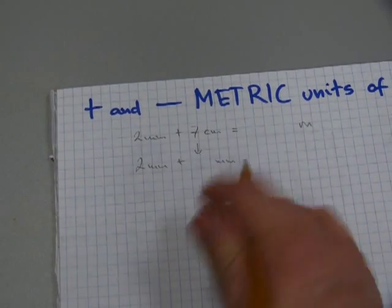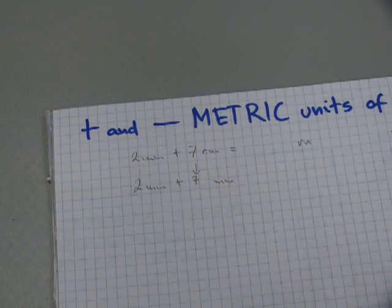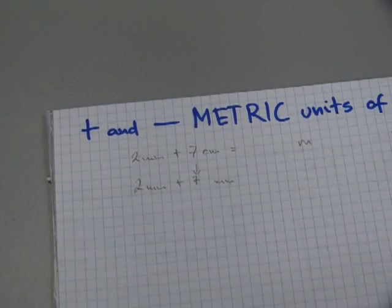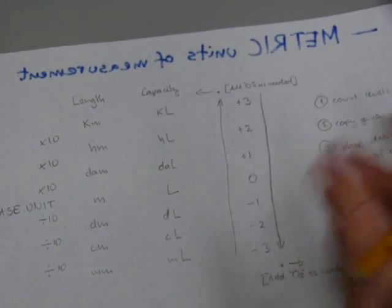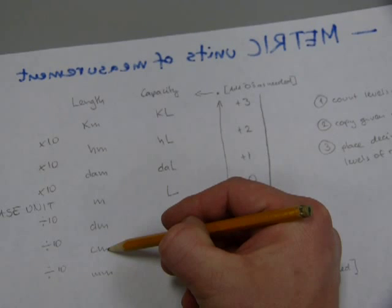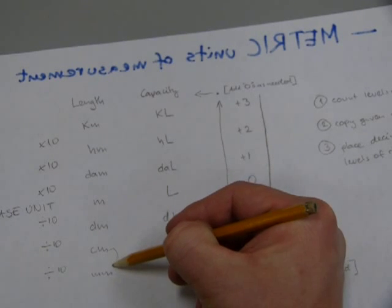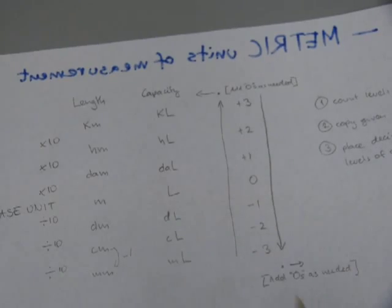Seven centimeters is how many millimeters? We copy the answer, the same amount there. And from centimeters to millimeters, how many levels is that? Now here is centimeters. We're converting it to millimeters. So, we went down one. Down one.